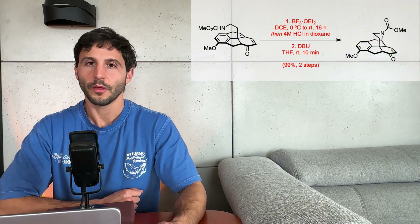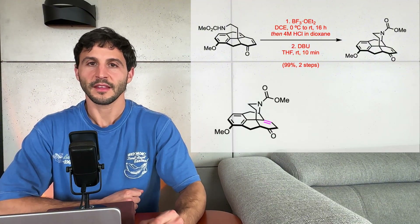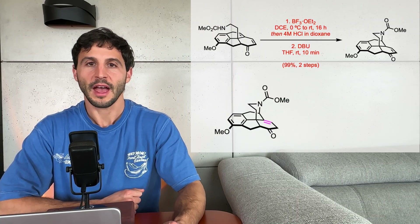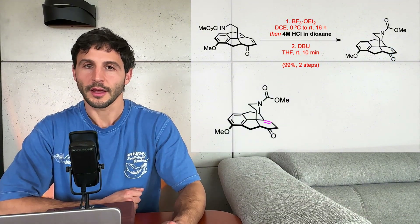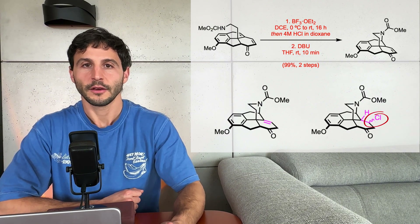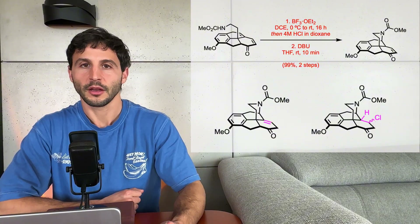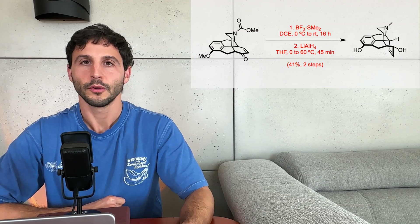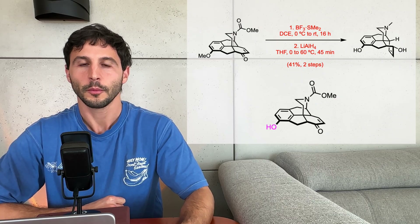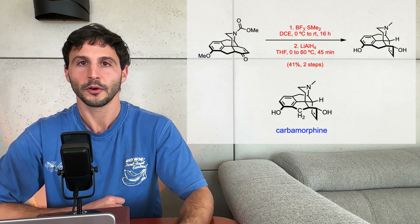Treatment of the substrate with boron trifluoride etherate complex induces a 1,6-conjugate addition. The resulting alkene moiety is then isomerized to the alpha-beta-unsaturated compound by adding hydrogen chloride, forming a beta-chloro ketone. Finally, elimination of the secondary chloride using DBU affords the desired product. The benzyl ether is then cleaved using boron trifluoride dimethyl sulfide complex, and in the last transformation, a global reduction of both the methyl carbamate and the enone carbonyl groups with lithium aluminum hydride completes the synthesis, delivering carbomorphine in 40% yield over two steps and an overall yield of 3% for the total synthesis.